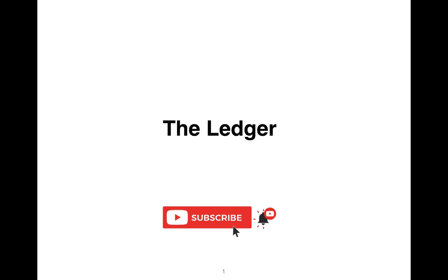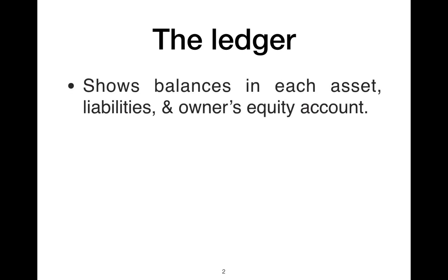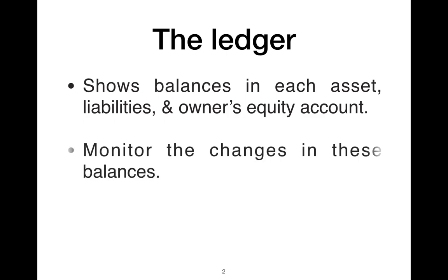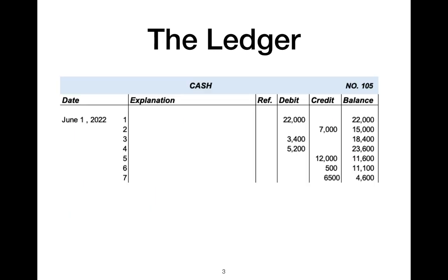How does the ledger help in the recording process? The ledger shows the balance in each of the accounts, and moreover it keeps track of changes in these balances. The general ledger is the basic form of the ledger and it contains all the assets, liabilities, and owners equity accounts.